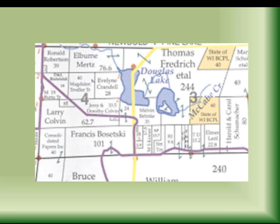Let's go through an exercise in trying to identify where your property boundaries and corners are. Let's say you are Francis Bosetsky and you own this 101-acre parcel of land right here — you own both sides of this road that passes through. You're troubled because this 40-acre parcel right here used to be owned by Consolidated Papers, which just harvested timber every 40 years, but now a private individual has bought it and there's all kinds of activity, and you're concerned they're trespassing. You want to identify where these corners are and where this property boundary is.